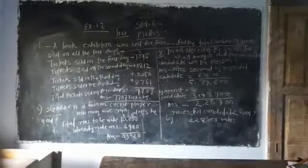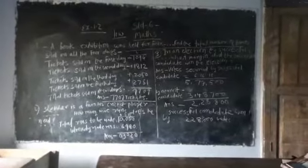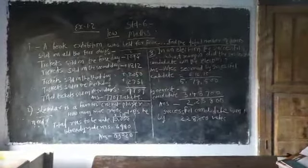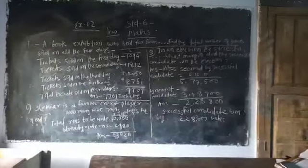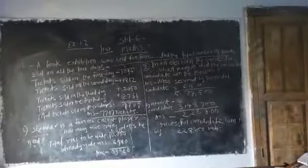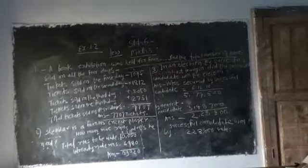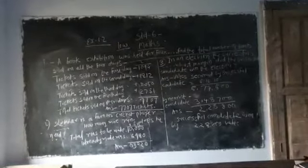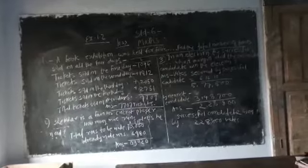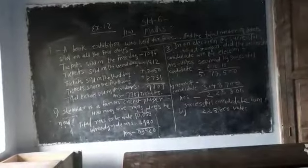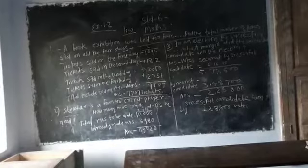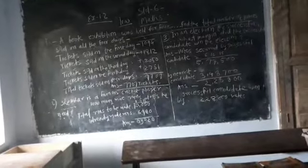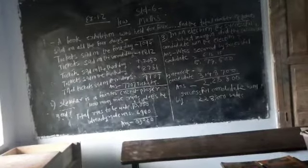In an election, the successful candidate registered 5,77,500 votes and his nearest rival secured 3,48,700 votes. By what margin did the successful candidate win the election?